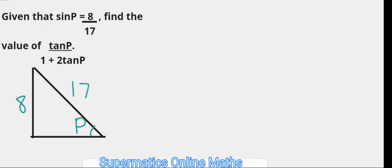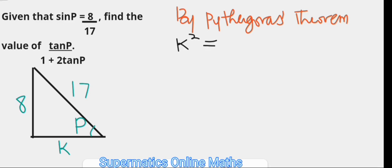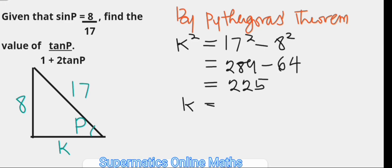So the third side, or the adjacent side, we're going to represent that using k. And by Pythagoras theorem, we have that the square of the side k must be equal to the difference between the square of the hypotenuse side and the opposite side, that is 289 minus 64, which is 225. So to get the length of the side k, we're going to be taking the square root, the positive one, of 225, which means that the value of the side, the length of the side k, is 15 units.